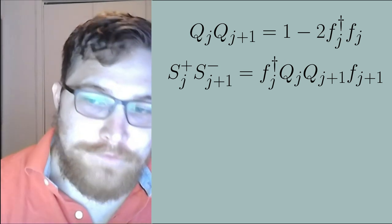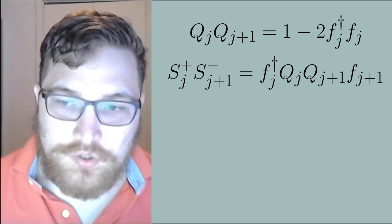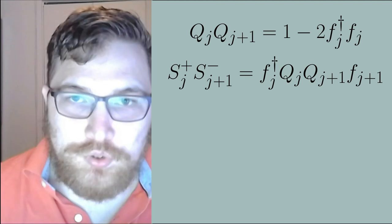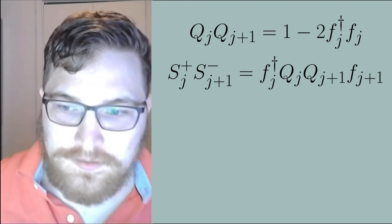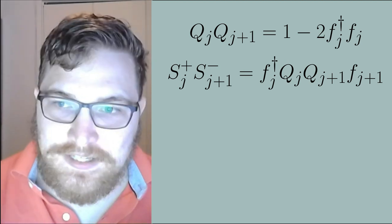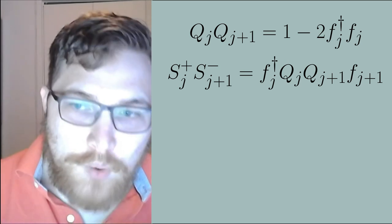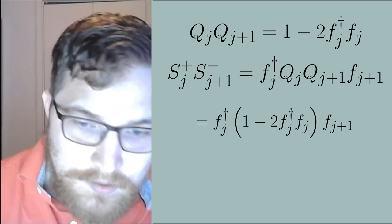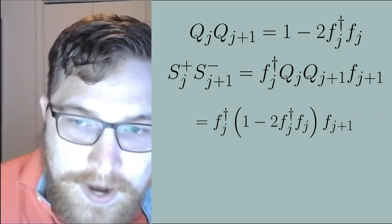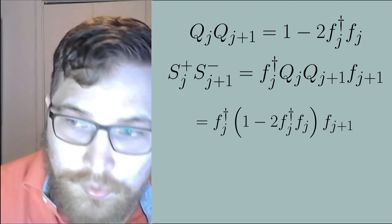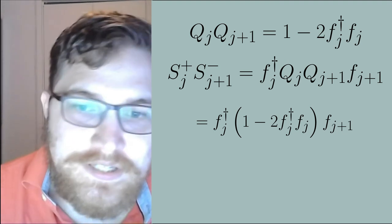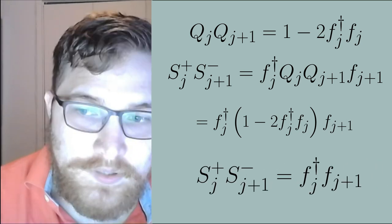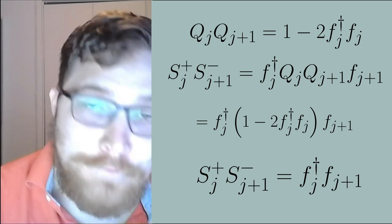So if we had for example a spin flip term in our Hamiltonian and wanted to map it to fermions we would write the following expression with our transformation. Note here the qj times the qj plus one in between our creation and annihilation operators for the fermions. Using our previous identities that we've worked out we can then rewrite this spin flip term in terms of the following creation annihilation operators and we know the fact that the square of a fermionic creation or annihilation operator is always zero. So this tells us that the nearest neighbor spin flipping term in a Hamiltonian is equivalent to a nearest neighbor hopping term for fermions.